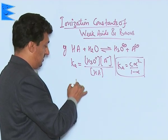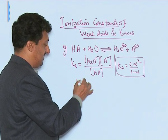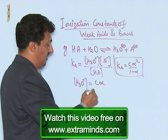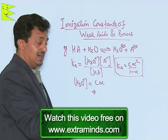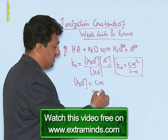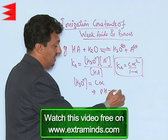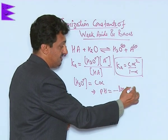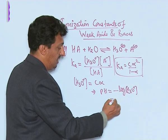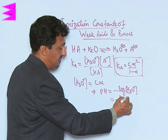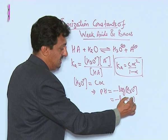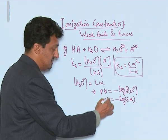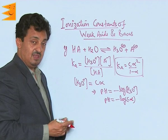The hydronium ion concentration in this case is C·α. So if anybody asks us to find out the pH, it will be minus log of the hydronium ion concentration, which means it will be minus log of C·α. That is going to give us the pH of this acid in water.